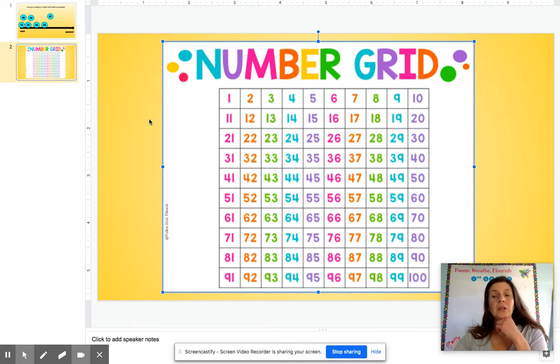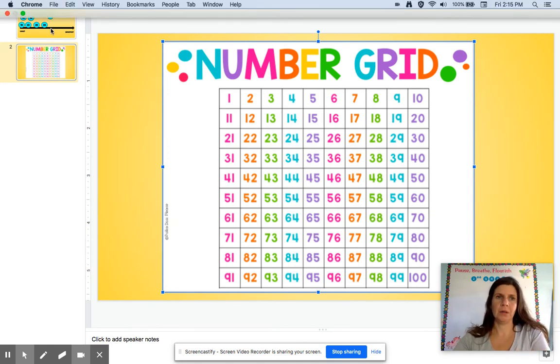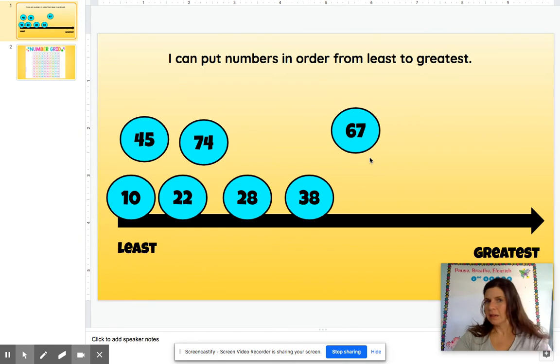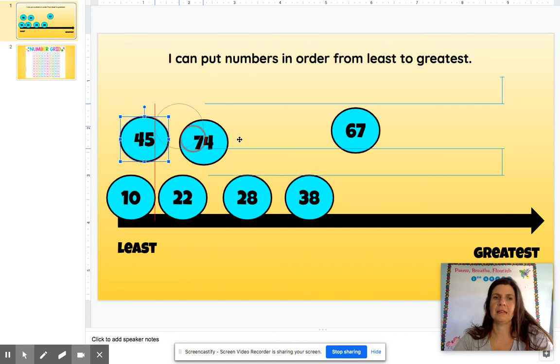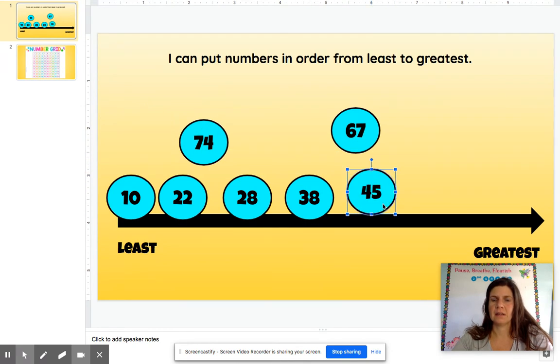So that's a way you can use the number grid to help you. So I'll go back up here and finish up. And I'm going to keep looking and look at the tens place. There's a four, seven, six. Oh, I know that four is less than six. It is less than seven. I know the number 45 is less than 67 and less than seven. So I'm going to put this right here.